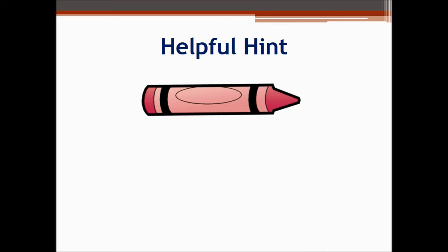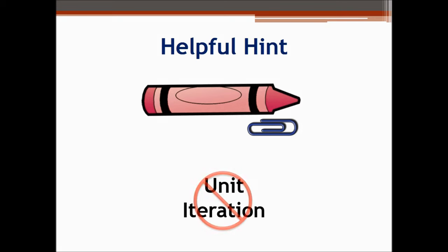When getting ready to measure an object, make sure that students are provided with more non-standard units than will be needed to measure the actual object. There is a concept called unit iteration, where students are only given one non-standard unit, for example one paper clip, and they use repetition of that single paper clip to measure the object. This is not developmentally appropriate for first grade and is not the focus of these standards.